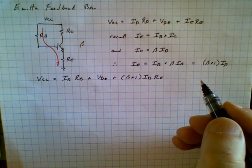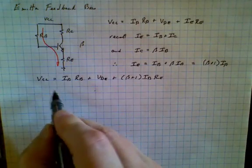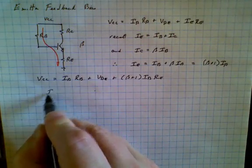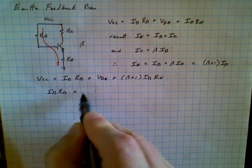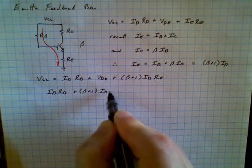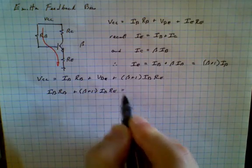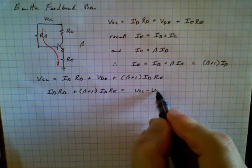And then, of course, we want to gather all the terms of Ib on one side and everything else on the other. So we can rearrange this expression so that Ib Rb plus beta plus 1 Ib Re is equal to Vcc minus Vbe.